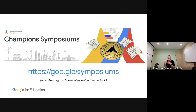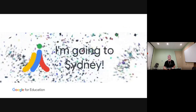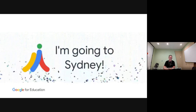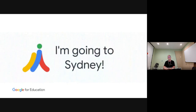We had one in Singapore, one in Mountain View in California, one in São Paulo, one in Ireland — they're all over the place. We've got one coming up in Sydney on December 6th, 7th, and 8th. If you are an innovator, trainer, or coach and haven't yet applied, we'd love to see as many of the community there as possible. The address is goo.gle/symposiums — note that if you go there without an innovator, trainer, or coach account you'll just get a page-not-found error.